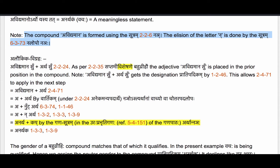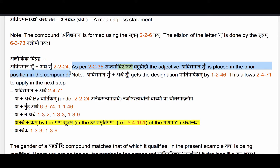The Alaukika Vigraha is Avidyamanasu plus Artha Su. The compounding is prescribed by Sutram 2.2.24 Aneka Manyapadarthe. As per Sutram 2.2.35 Saptami Visheshane Bhabhubrihau, the adjective Avidyamanasu is placed in the prior position in the compound.